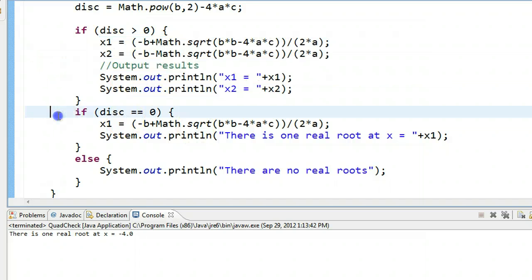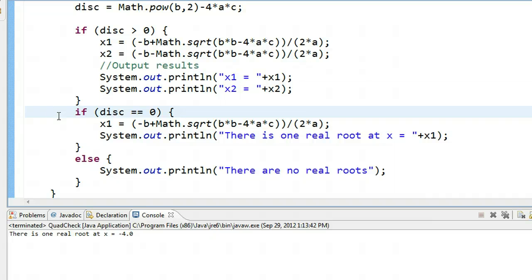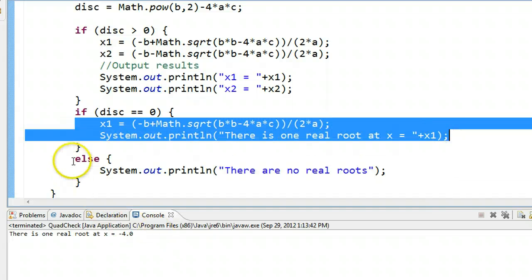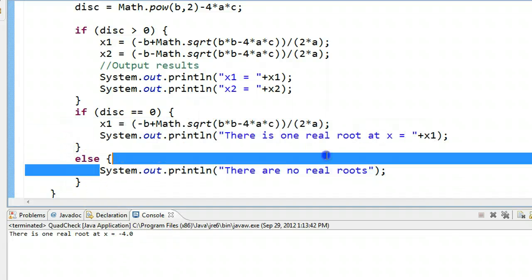Then it comes down here and says if the discriminant is equivalent to 0. And it will definitely check this. And if it's equivalent to 0, it executes this chunk of code. Else, it does this.